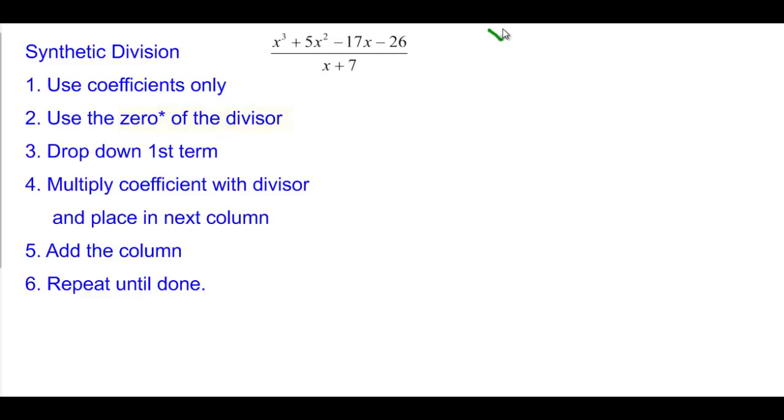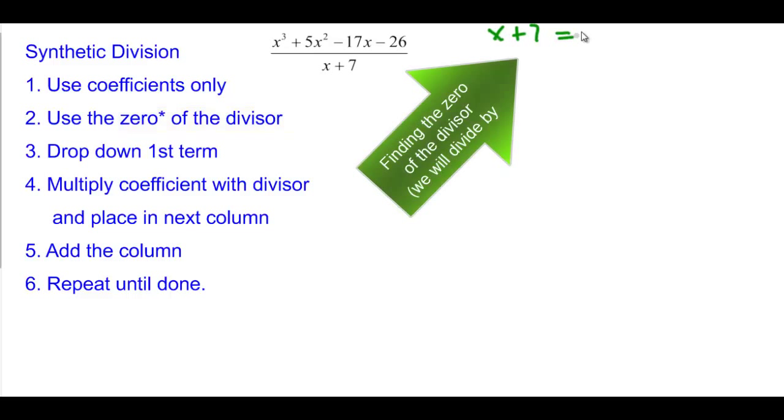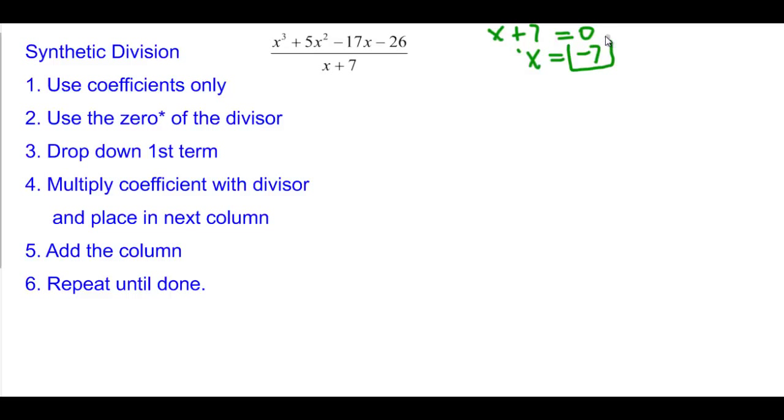So let's start there. We have x plus 7, and we want to find the zero. When is it equal to zero? So x is equal to negative 7. So I need to use negative 7. And I also have to use the coefficients of this one. We have the coefficient of x cubed is 1, coefficient on x squared is 5. Leave some space in between, because you've got to add and multiply. And then it's minus 17x, and then it's minus 26.